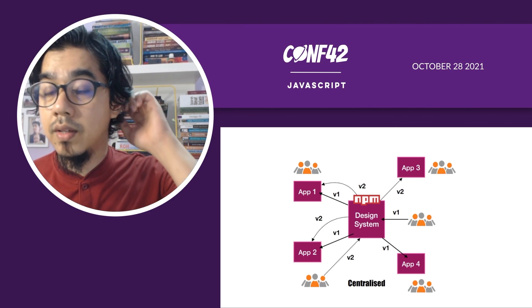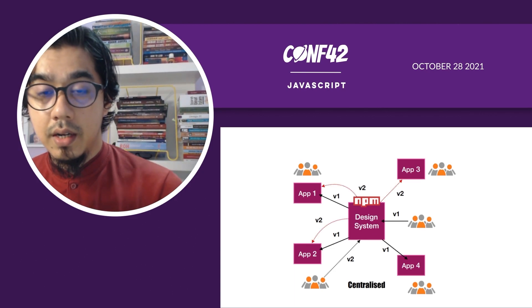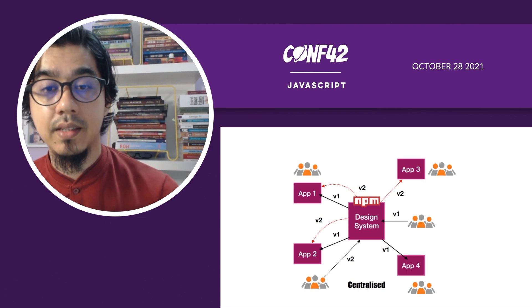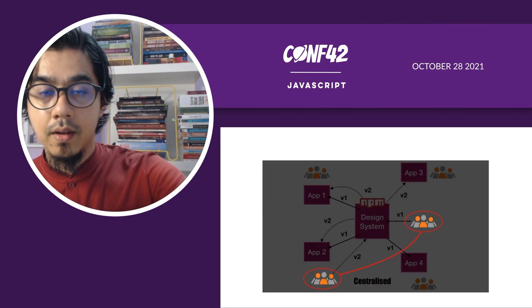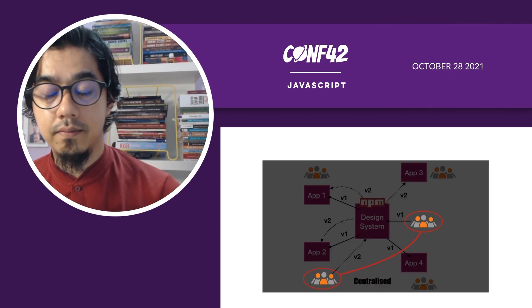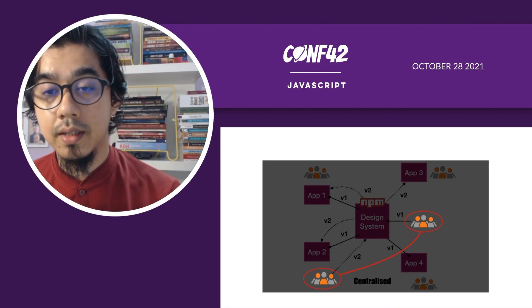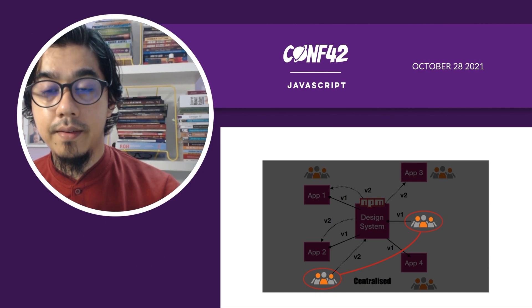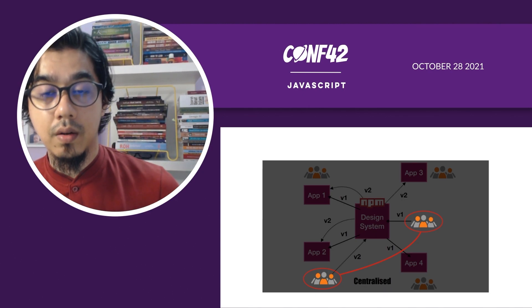The design system components are published into a package manager like npm, or an internal package manager like Verdaccio or Nexus. Changes made by teams require the consumers of the design system to recompile their codebase and redeploy their applications. For a team to make a change to the design system components, they need to submit a pull request as a contributor. Their code will be reviewed by the core component developer, who provides feedback, and if everything is approved the change will be merged.